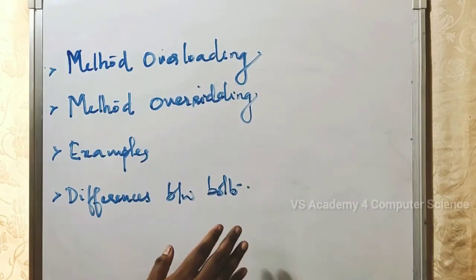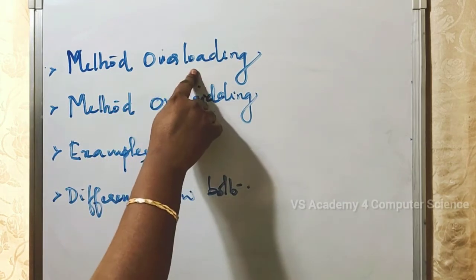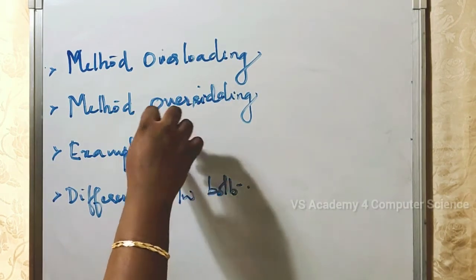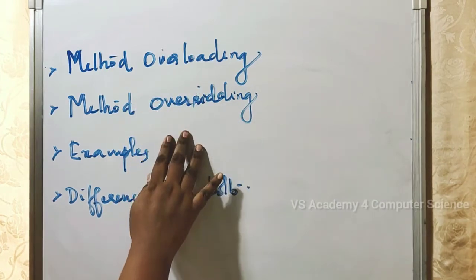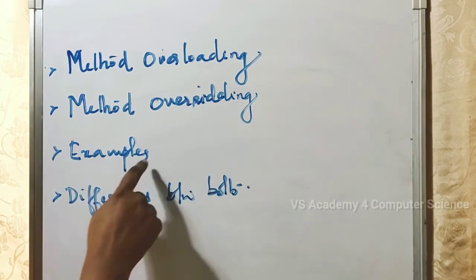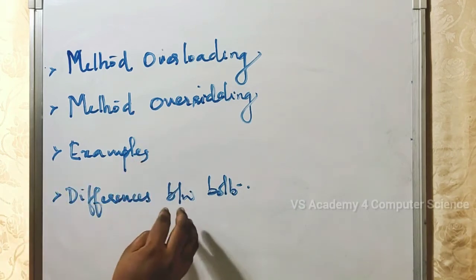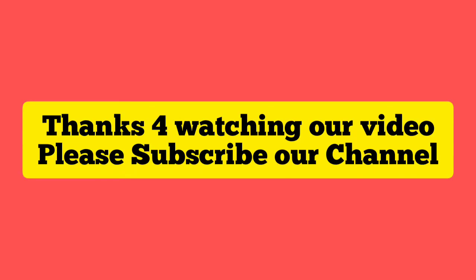So in this video, we have discussed what is method overloading and what is method overriding, examples of each, how to implement them, and the main differences between the two — method overloading and method overriding. Hope you understood the video. Thank you. See you.